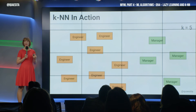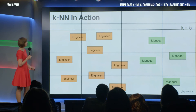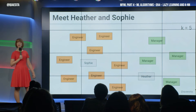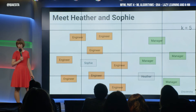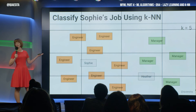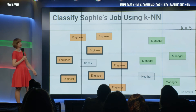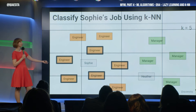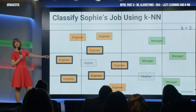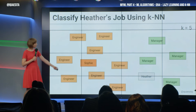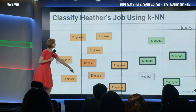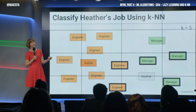That K, by the way, is a hyperparameter. We'll need to tune it and we'll see that shortly. But for now, meet Heather and Sophie — that's where they sit. We will use five nearest neighbors to diagnose them as engineer or manager. First, Sophie — we find her five nearest neighbors in space. All we do is say, what's the most common label? We give her that label, so we say she is an engineer. Then we do the same thing for Heather, and Heather gets the manager label.